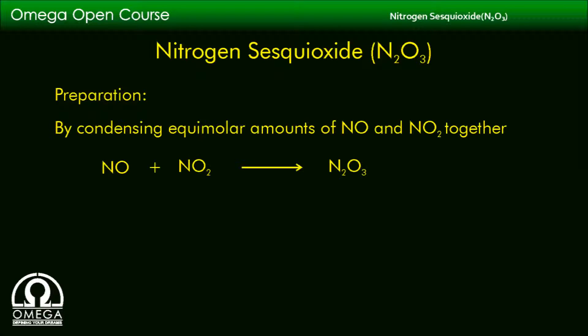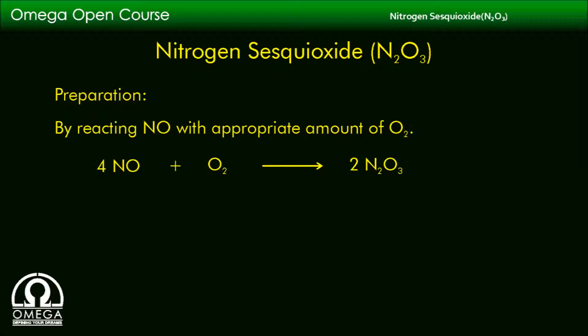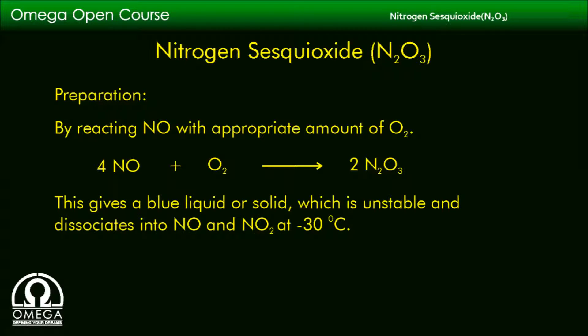It is prepared by condensing equimolar amounts of NO and NO2 together. The reaction is: NO + NO2 → N2O3. It can also be prepared by reacting NO with an appropriate amount of oxygen: 4NO + O2 → 2N2O3. This gives a blue liquid or solid which is unstable and dissociates into NO and NO2 at minus 30 degrees Celsius.